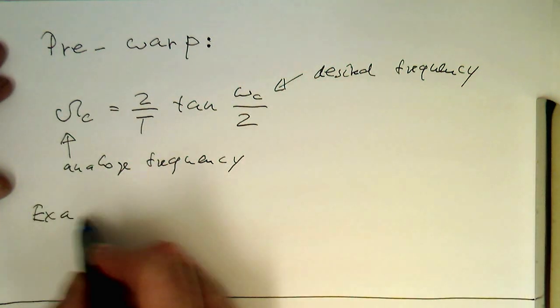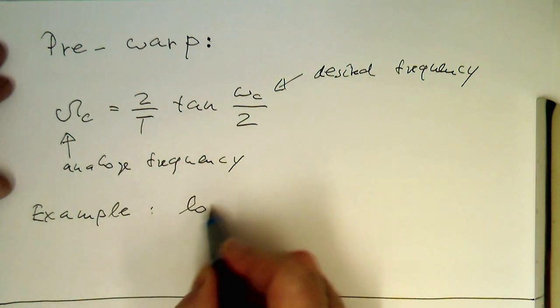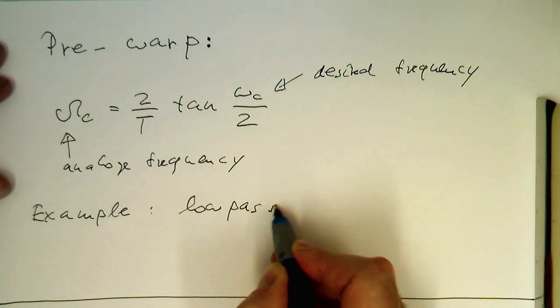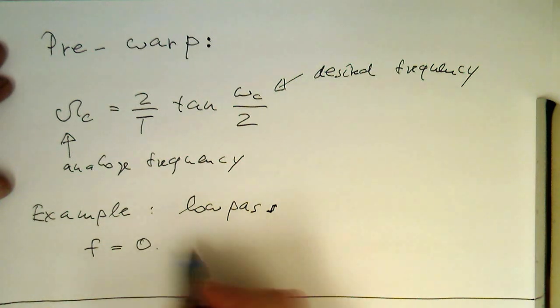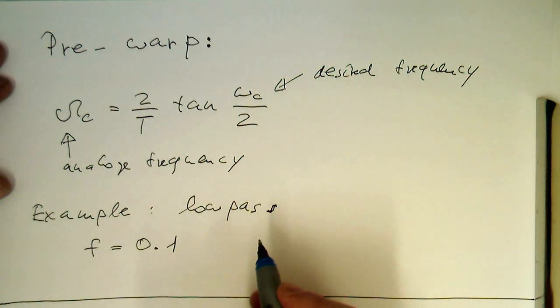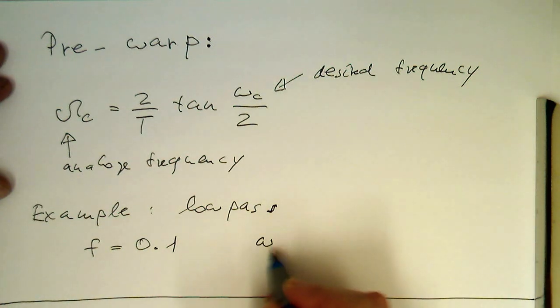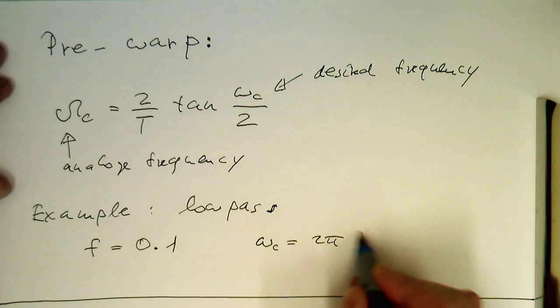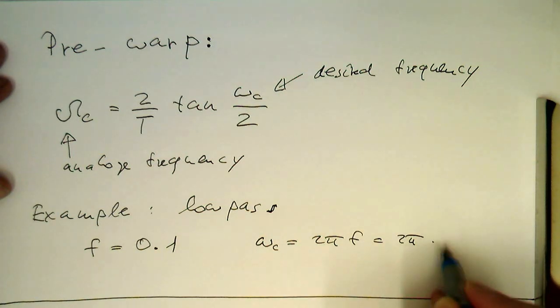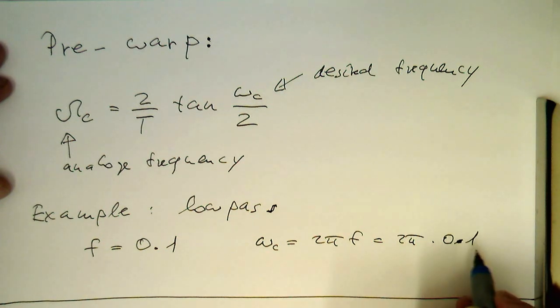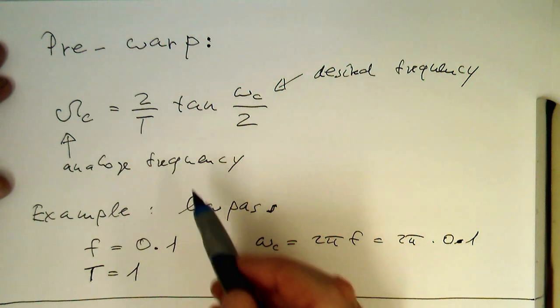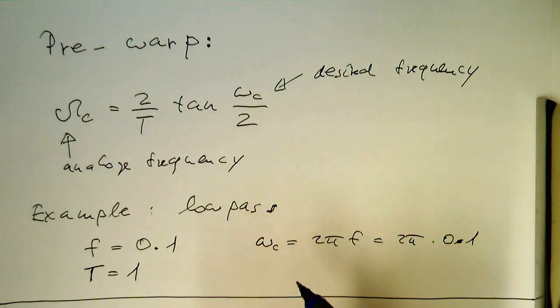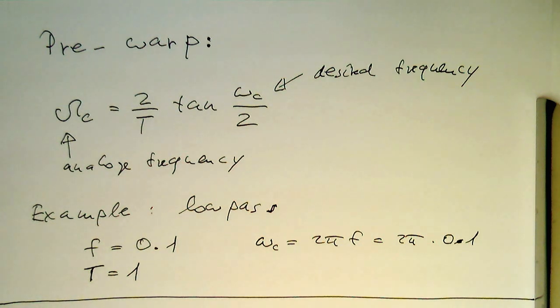So if we now go back to our example, the low-pass filter, we can do our pre-warping here. Let's say we would like to have a cutoff frequency of 0.1 in our low-pass filter. This means omega_c is 2π f, or 2π times 0.1. As we know, T doesn't matter, so we're setting T to 1. Let's do this now in MATLAB.